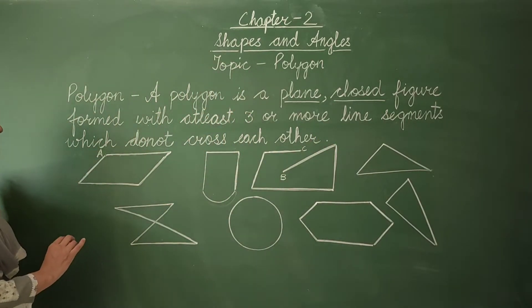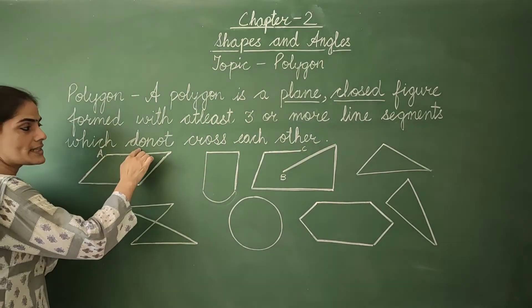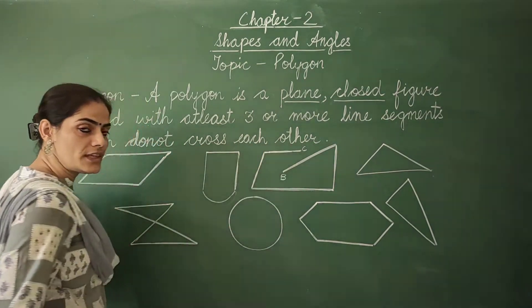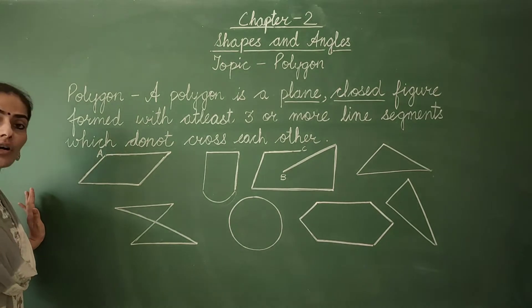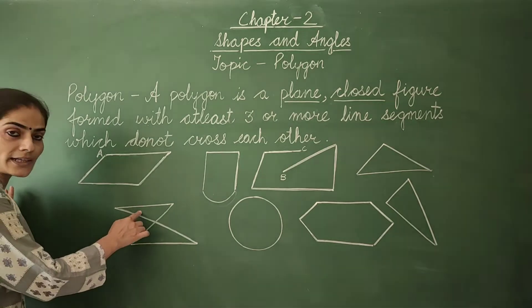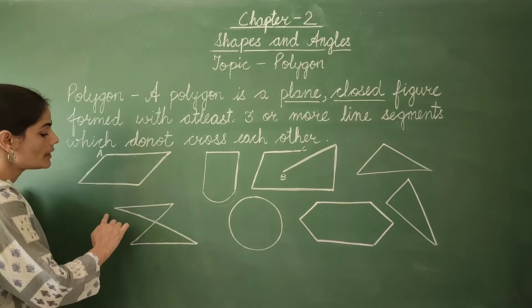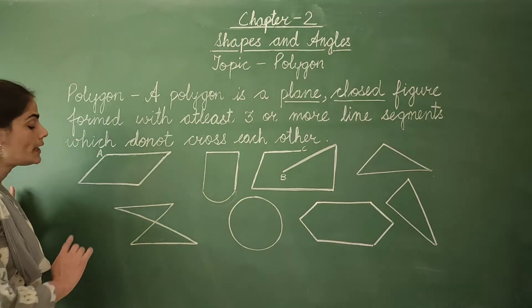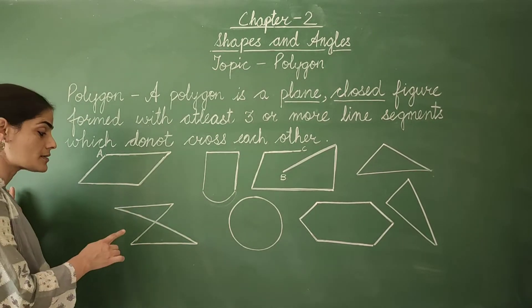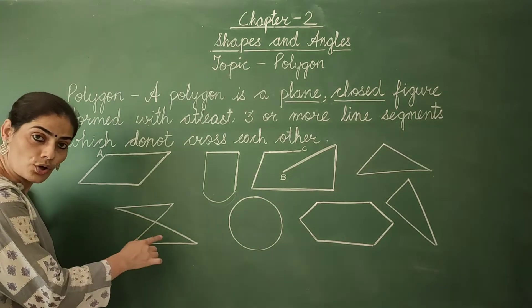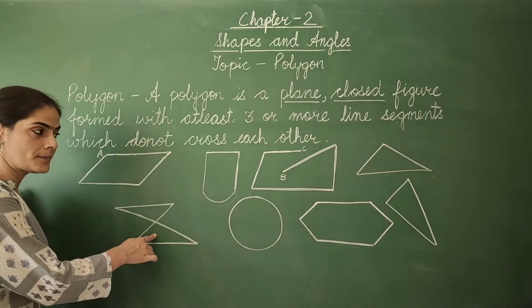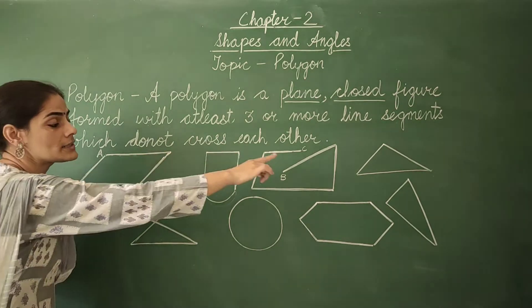The last property says that these line segments do not cross each other. If these line segments cross each other, we do not consider it as a polygon. Look at this figure — it is a closed figure, it is a plane figure, and it is made with line segments. But these line segments are crossing, and that is why it is not a polygon.